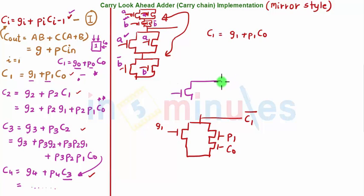I'm going to interchange my input g and p. So for a carry look-ahead implementation, you need to interchange your g and p in order to get the functionality. So this is my pMOS, this is my pMOS, this also is my pMOS. Now this will be p1, this will be g1, and this will be c0.